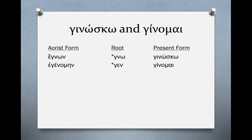The root of egnon is gen, and the root here looks a little different from the present tense form. The present or lexical form is ginomai, and this means 'I am' or 'I come into existence' — usually it's translated as some kind of being verb. The root is gen, which looks a little different from the gin we're used to seeing in the present form. The aorist form forms directly from the root, instead of forming from the present tense stem.